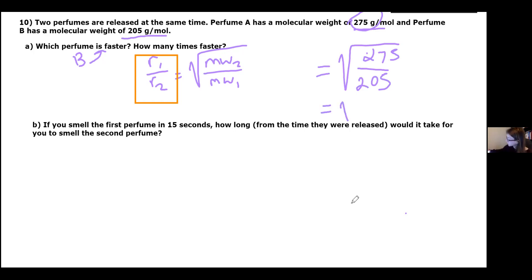So if you want to simplify that first, you can do 275 divided by 205, which is 1.34. And then when you take the square root of that, you should get 1.158 or 1.16. So it's 1.16 times faster. 1.16 times faster.